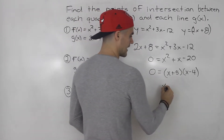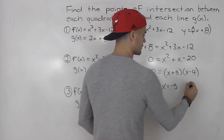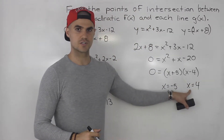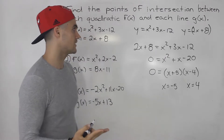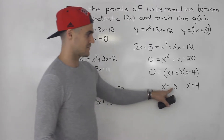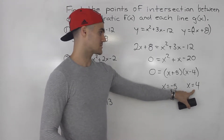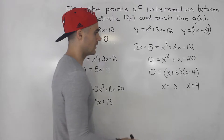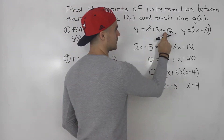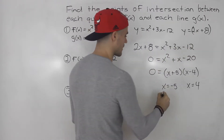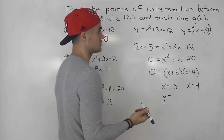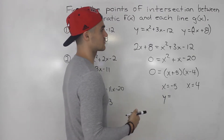So x equals negative 5 or x equals 4. Because we got two solutions, there are actually two points of intersection between this quadratic and this line. We have the x values — now we need the corresponding y values. A good way to check: plug the x value into both equations and verify you get the same y value.